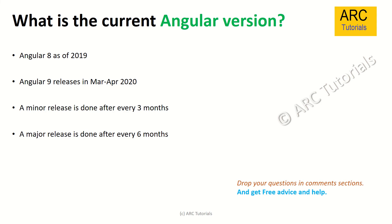What is the current version of Angular? This is frequently asked to check whether the candidate is up to date. As of 2019, the Angular version is 8. In 2020, Angular 9 is going to be released around the March-April timeline. Every minor release is done every three months and a major release is done every six months.